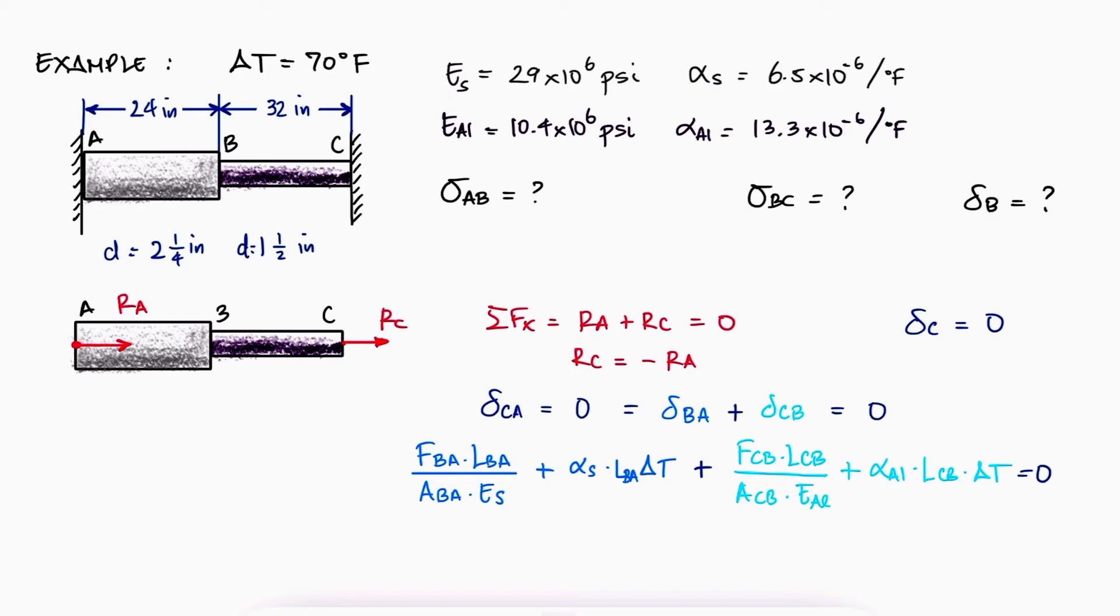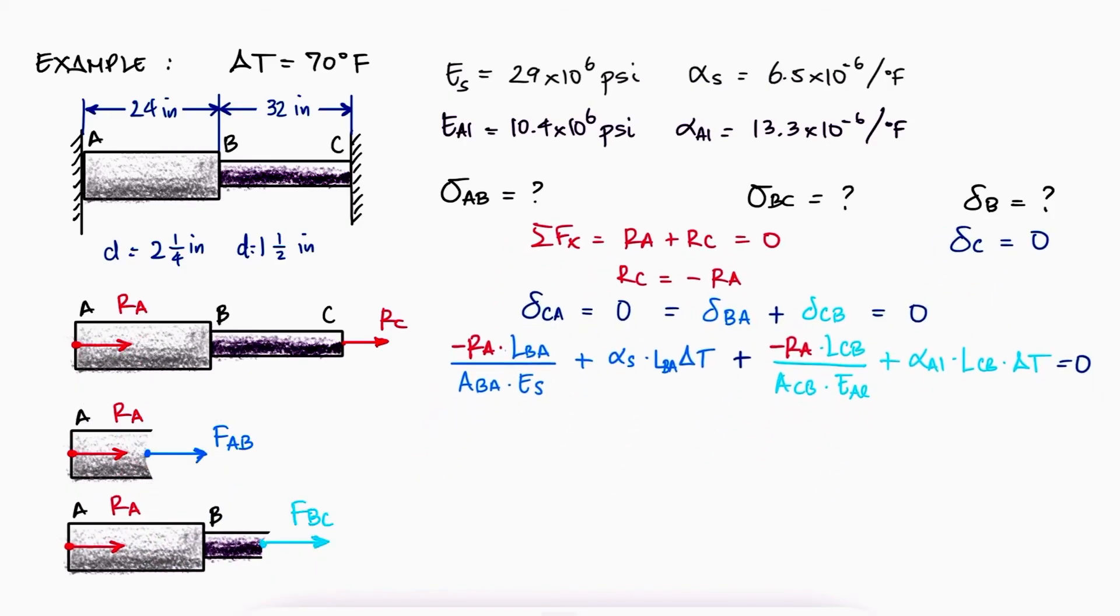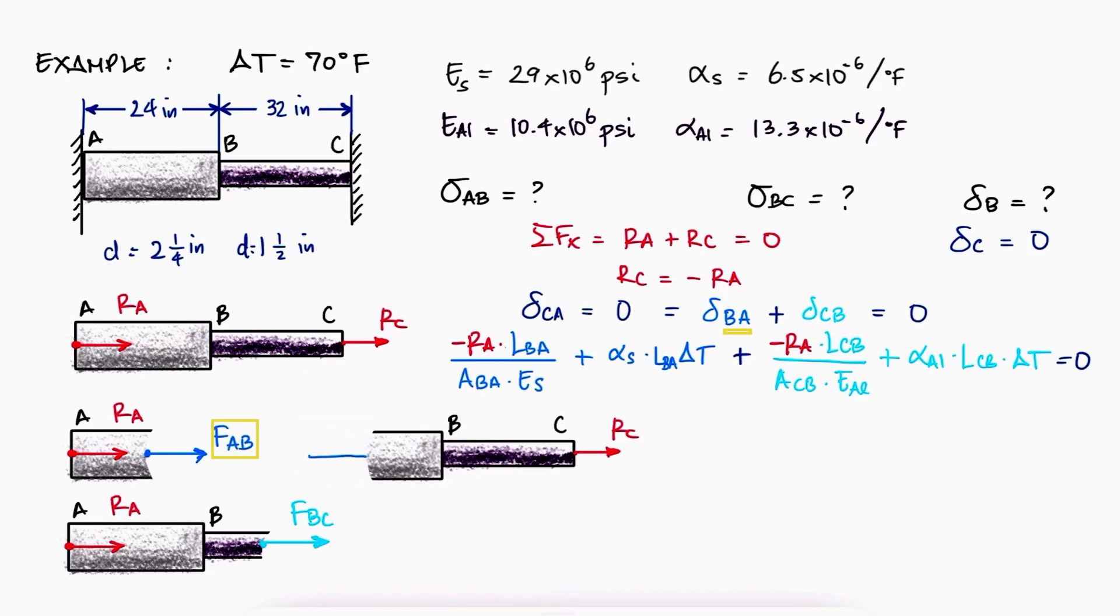Following the positive assumption for all unknown forces, the internal load from A to B is minus RA, as is the internal load from B to C. Notice that FAB is interchangeable with FBA and FBC with FCB, because for deflection purposes, they are both tensile forces, and therefore there's no need to add an extra negative sign.